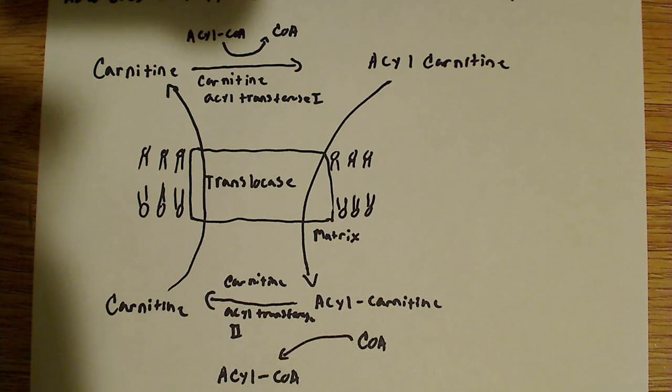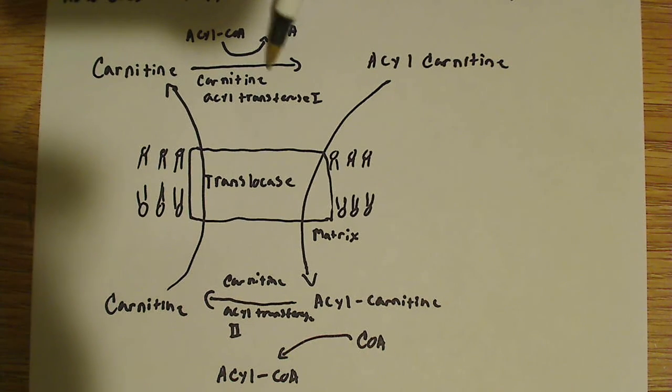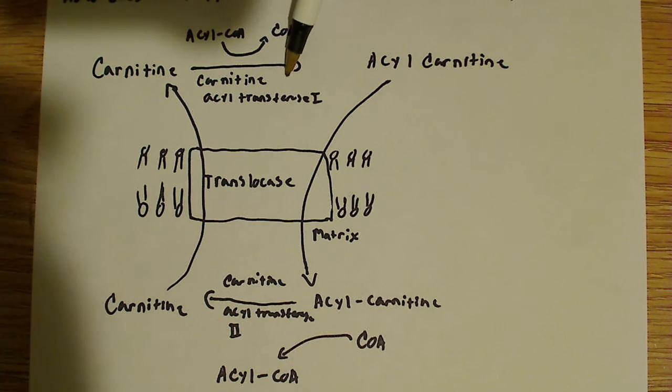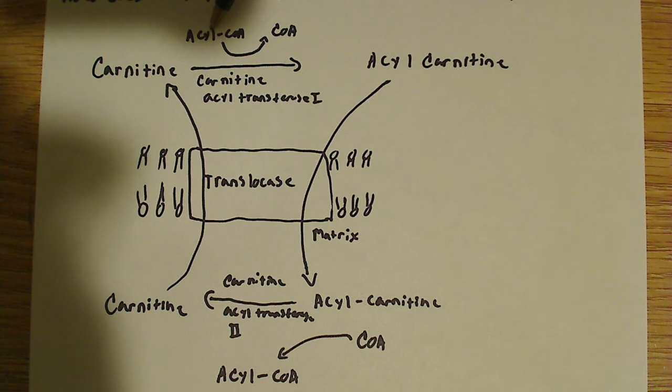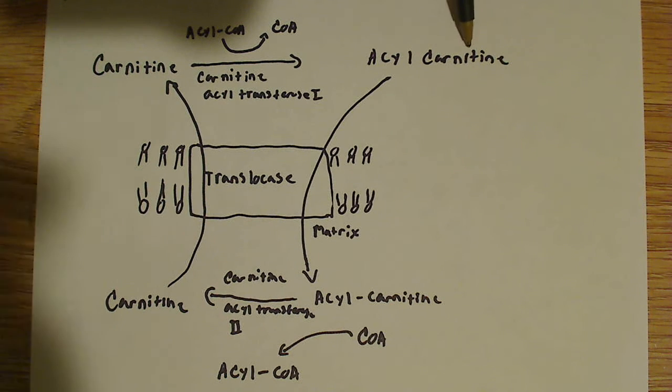That's what we want for the beta-oxidation process, but we can't cross the membrane with it. So what we have to do is we have to put this carnitine molecule on the acyl group. And that's accomplished or catalyzed by carnitine acyl-transferase 1. So this enzyme right here is going to catalyze the reaction. It's going to remove this CoA and replace it with carnitine, and that's where you get this. You get acyl-carnitine.